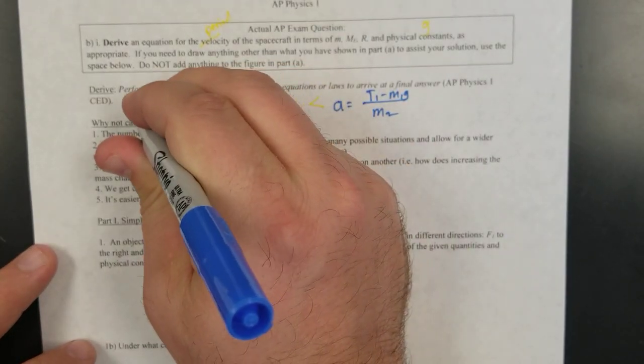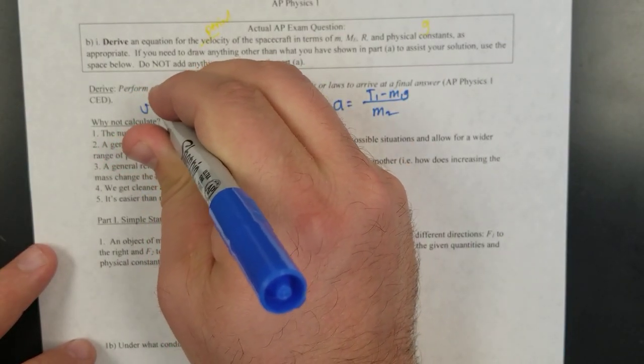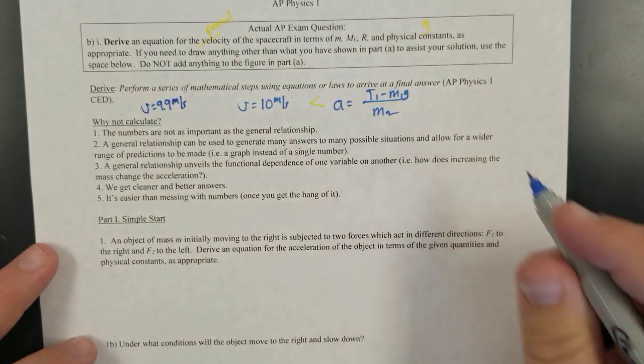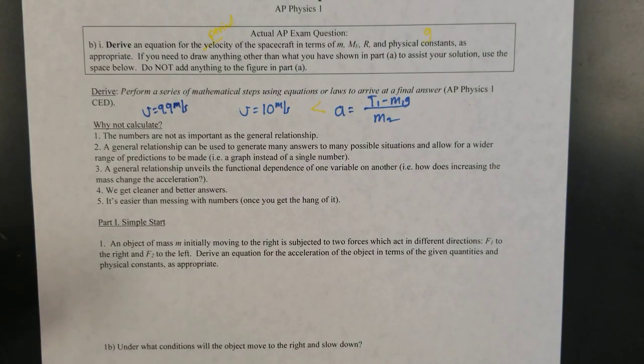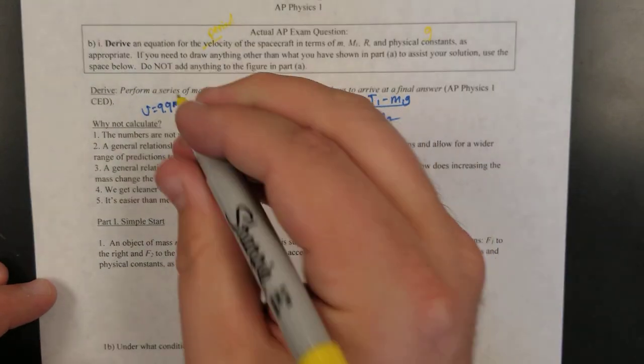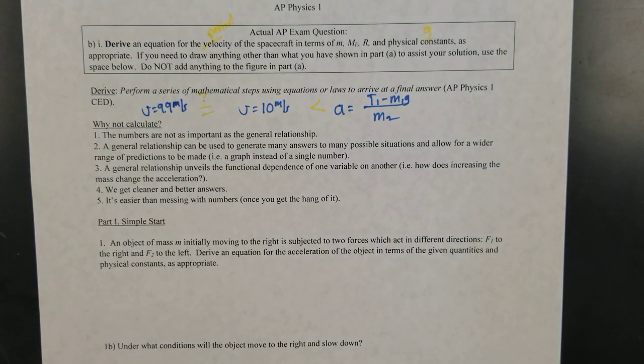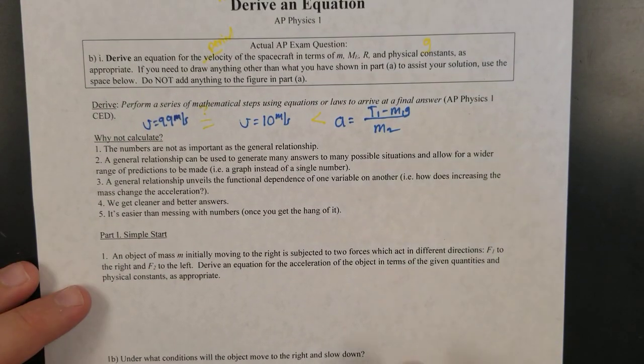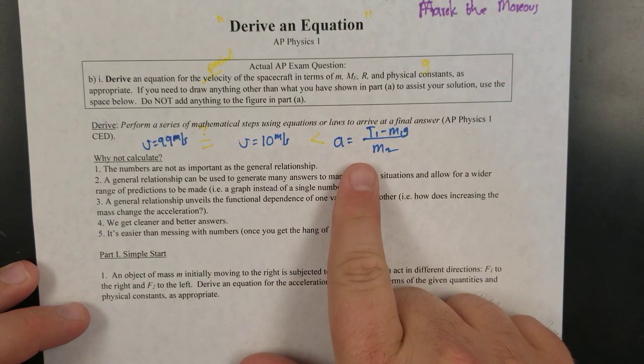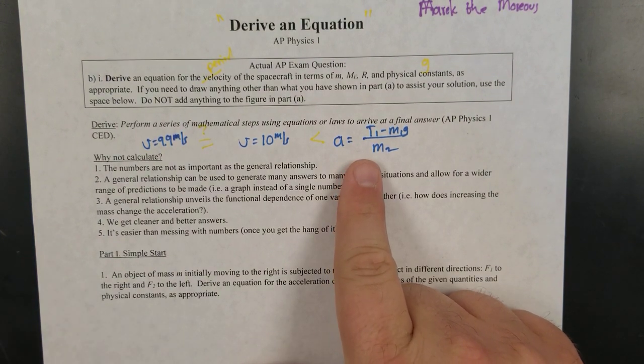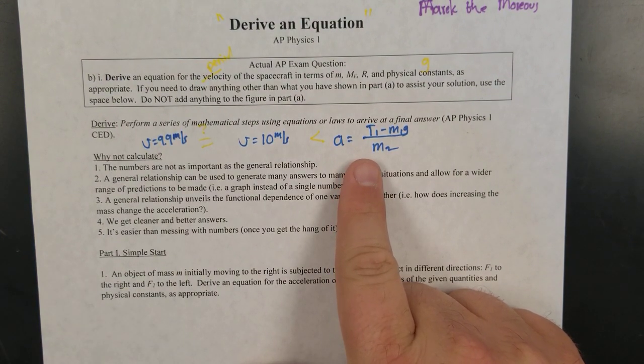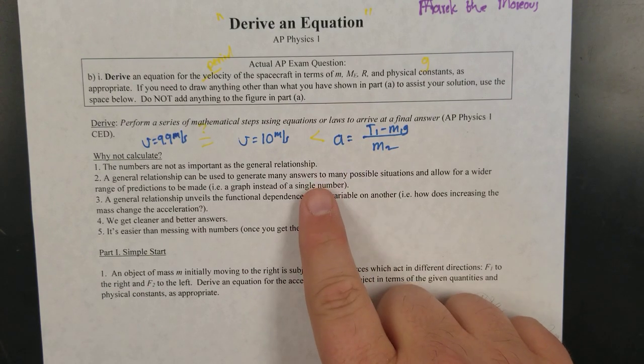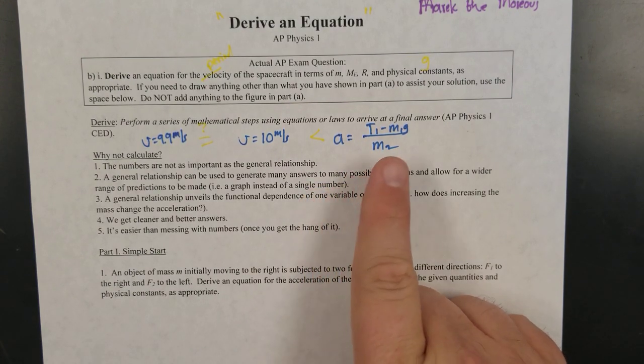Because maybe some other student says, well, V equals 9.9 meters per second. Maybe somebody else says it's 10.2 meters per second. And that's like, are these really the same? And so those are all the reasons why we want to be able to do something like this, where we get an answer without using numbers that we can then get more general ideas about what's happening from that answer.